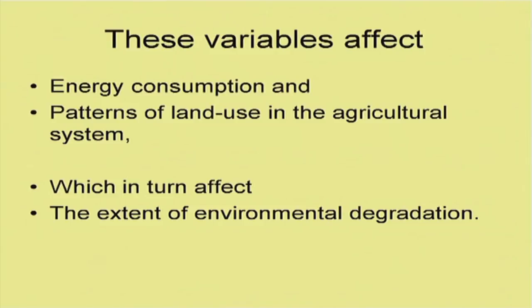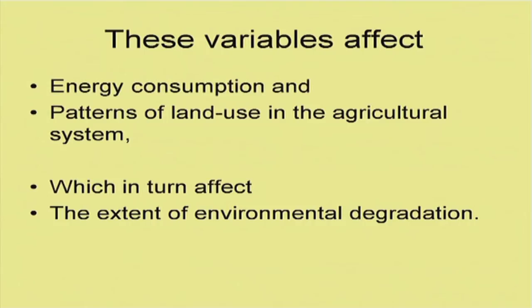These factors — income inequality, international prices, investment choice, technology choice, and others — all change with a differential approach to development. These variables affect two important factors from an environmental point of view: energy consumption and the pattern of land use in the agriculture system. When these two are affected, they in turn affect the extent of environmental degradation, since land use pattern and energy consumption are crucial factors determining whether environmental degradation takes place faster or slower.